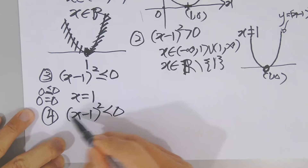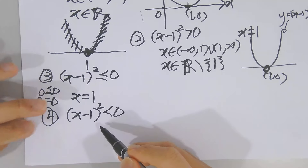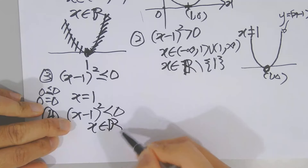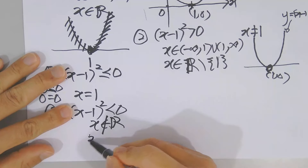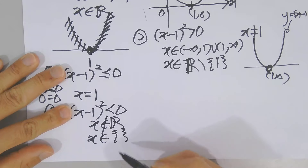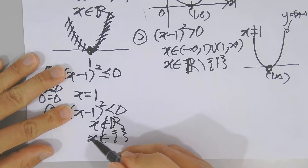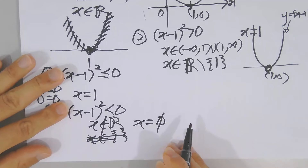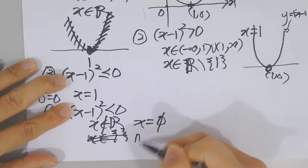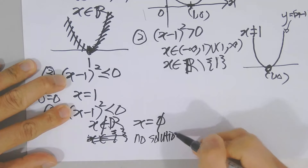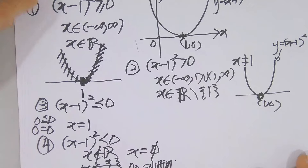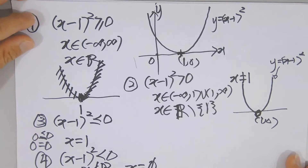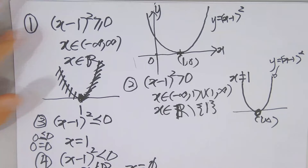For the fourth applied case: (x − 1)² < 0. This is impossible — it cannot be less than zero. So the answer is no solution, or the empty set. There is no solution. In the next video I'm going to talk about something even deeper than this — another case — so you can study that if you love it.